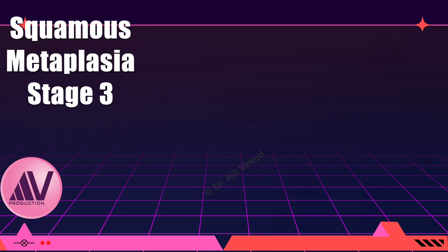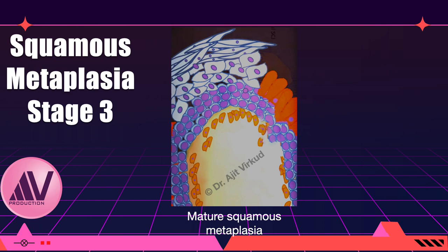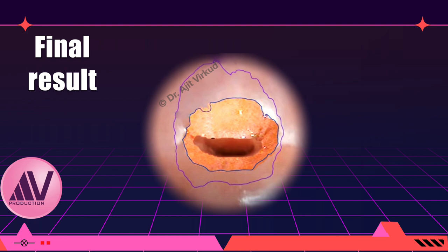Subsequently, even the superficial squamous cells are formed, giving rise to the stage called mature squamous metaplasia. Remember, all the denuded areas are not in the same stage of metaplasia — some areas may be in the first stage, others in the second phase, and some in the third stage. At the completion of all three stages, a new squamo-columnar junction develops towards the internal os.